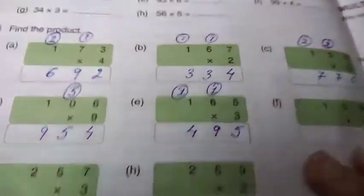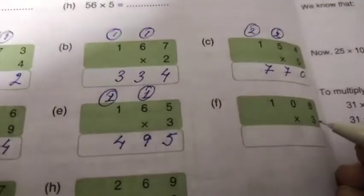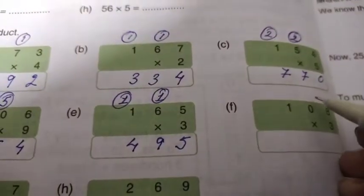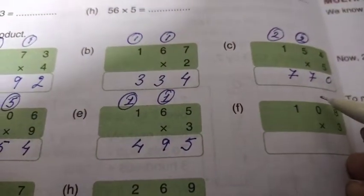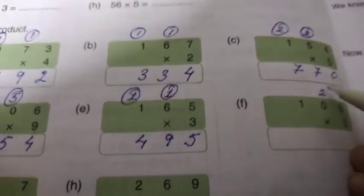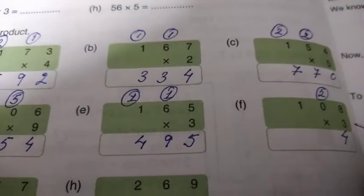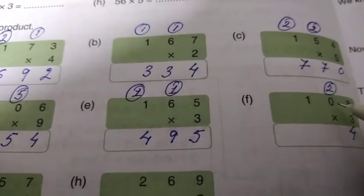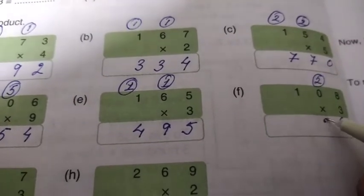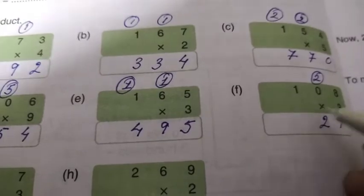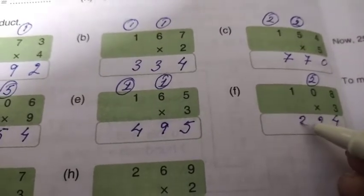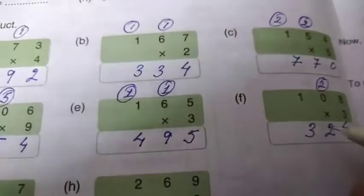Next: 3 8's are 24 — write 4, carry 2. 3 0's are 0, plus 2 equals 2. 3 1's are 3. So 324 will be your answer.